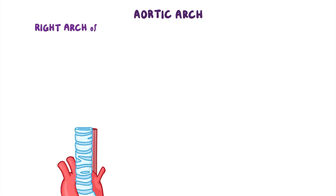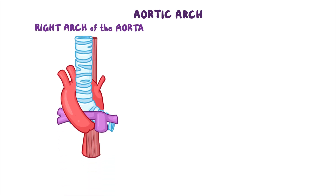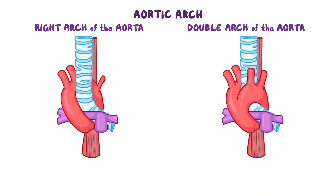Speaking of the aorta, let's have a look at some variations of the aortic arch. Sometimes there may be a right arch of the aorta, which courses to the right of the trachea instead of its usual course to the left of the trachea. In rare cases, a double arch of the aorta can occur, which forms a ring around the esophagus and trachea, which can compress these structures and potentially result in difficulty with breathing and swallowing.